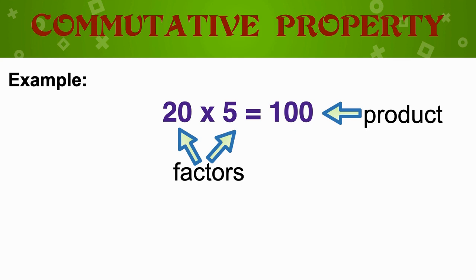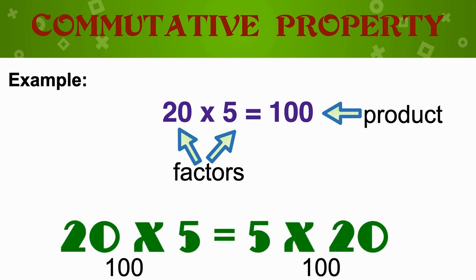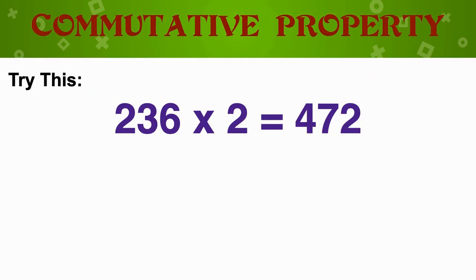The commutative property tells us that no matter the order, the product is still the same. That means that if 20 times 5 is 100, then 5 times 20 is also 100. Let's try this: 236 times 2 is equal to 472.